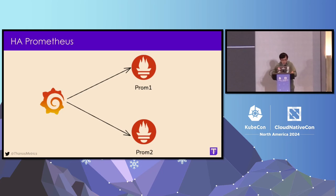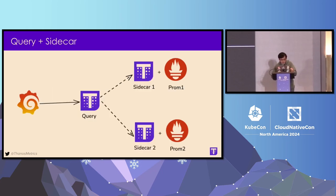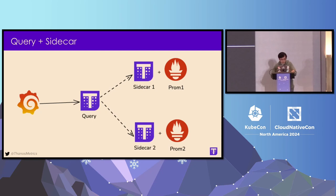So how can Thanos help here? We will deploy a component called Thanos Query. Thanos Query can provide a consistent global view by aggregating and deduplicating data from your Prometheus HA pairs. We also need to deploy Thanos sidecar components alongside your Prometheus. This way, Thanos Query is able to talk with your Thanos sidecar through the Thanos Store gRPC API. Even if a single Prometheus goes down, Thanos Query always tries to aggregate from all your Prometheus, maintaining a consistent view.